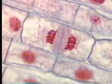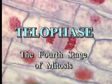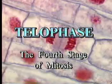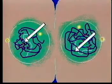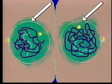The fourth and final stage of mitosis is called telophase. Telophase is defined as the stage of mitosis when the new daughter chromosomes change back into the threads of chromatin, and new nuclear membranes begin to form. Also during telophase, new nucleoli appear in each newly forming nucleus.